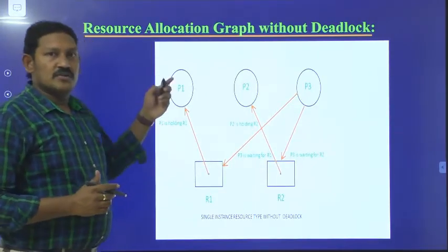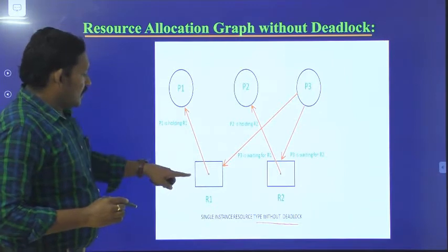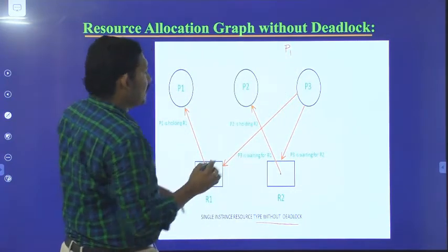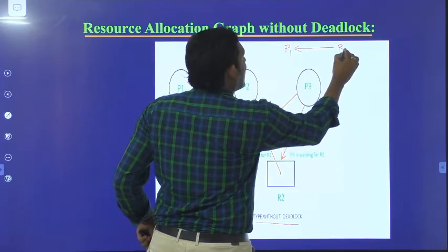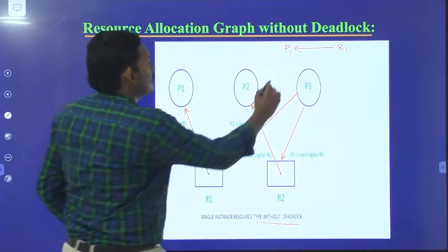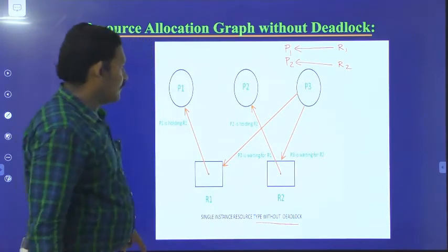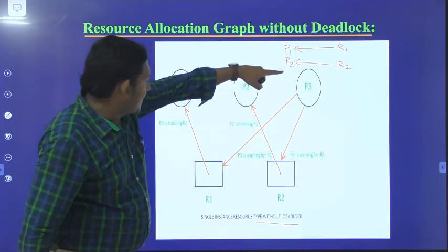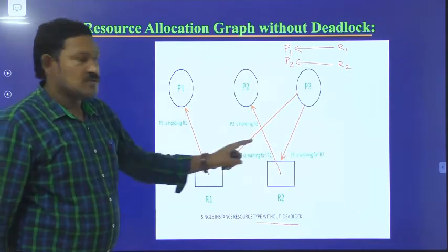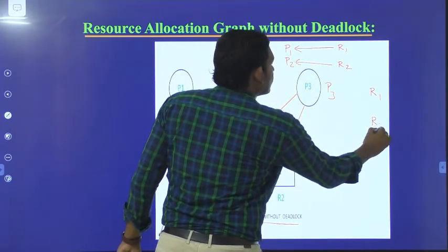This is another example — the Resource Allocation Graph without deadlock. Here, process P1 is holding resource R1, process P2 is holding resource R2, and we have P3 which is waiting for both resource R1 and R2.